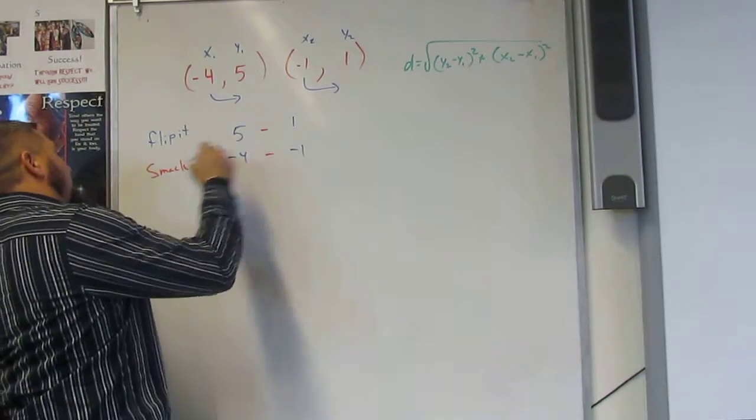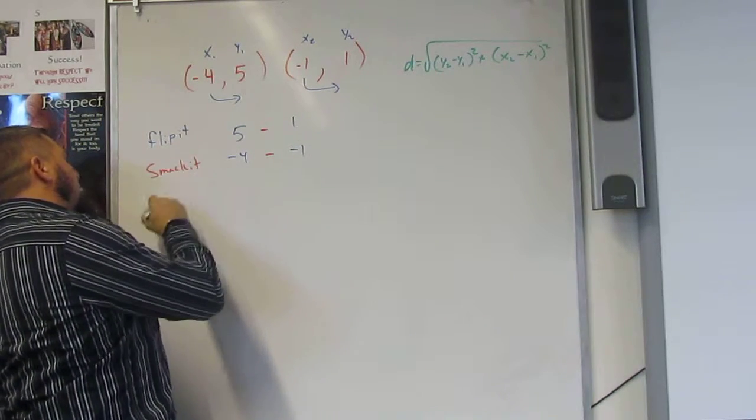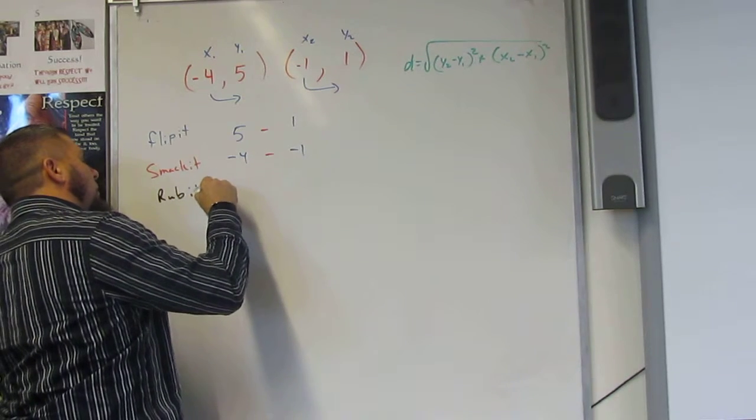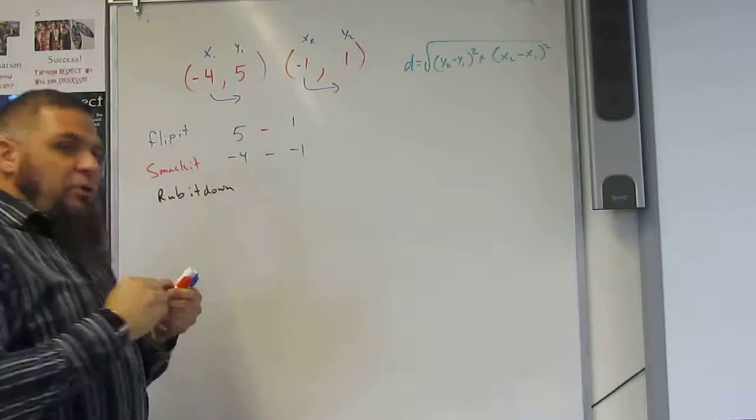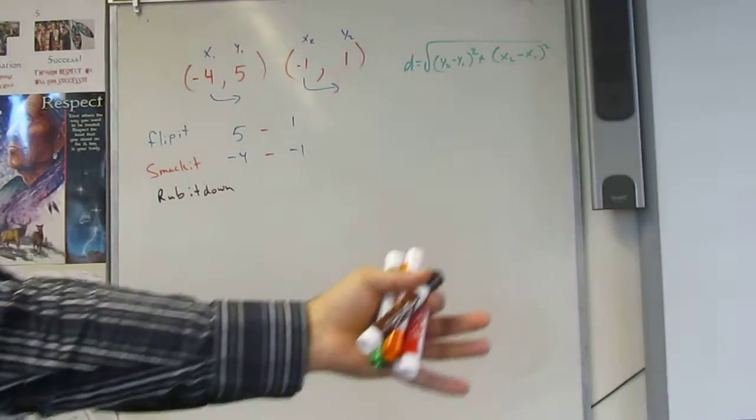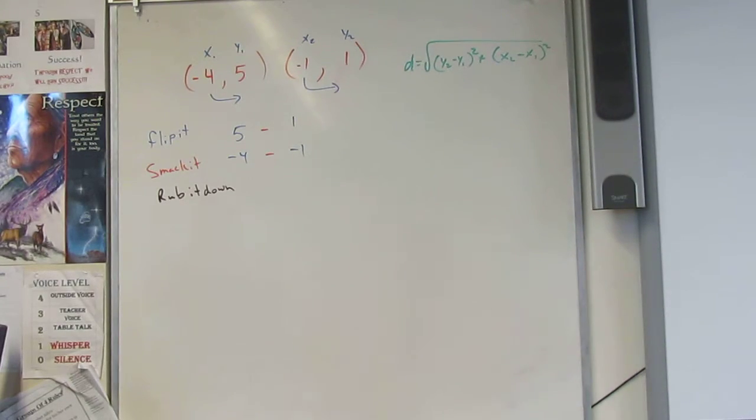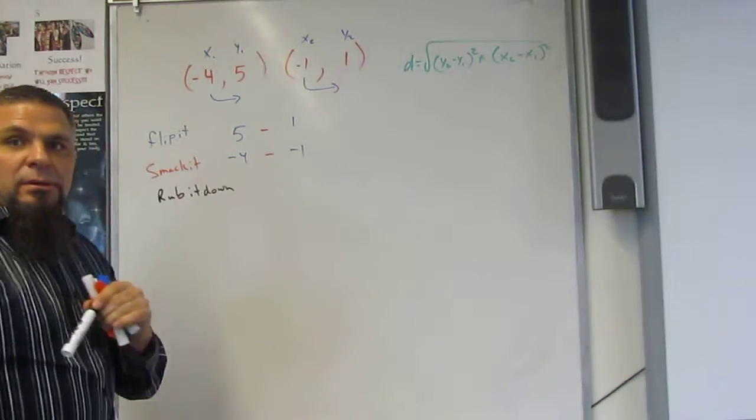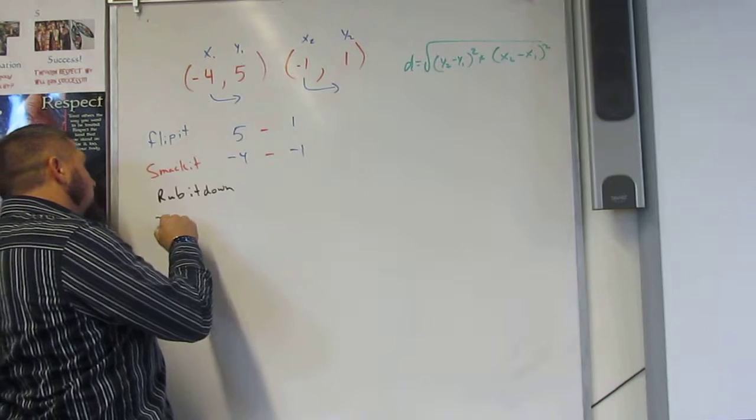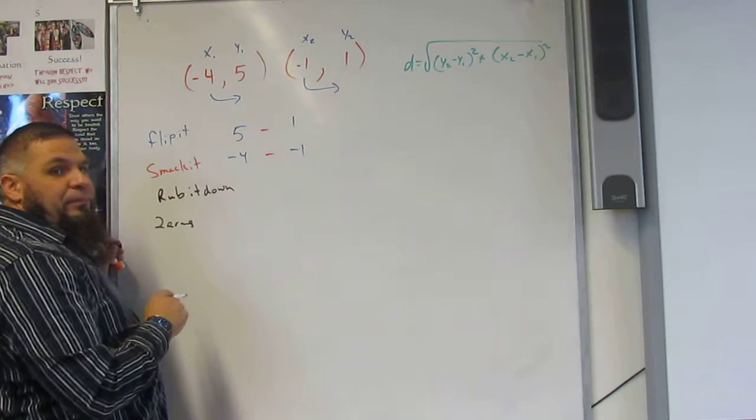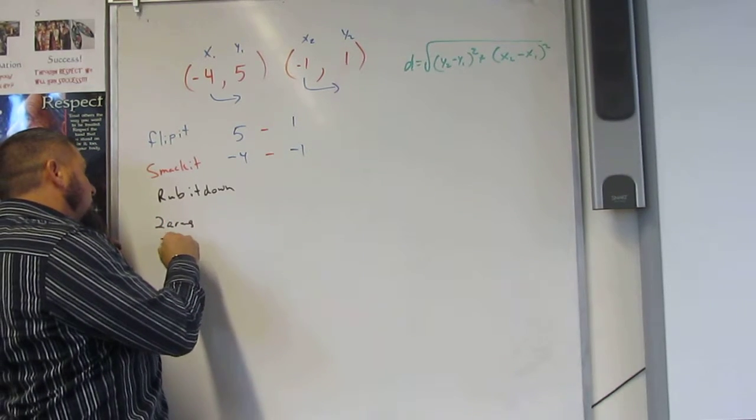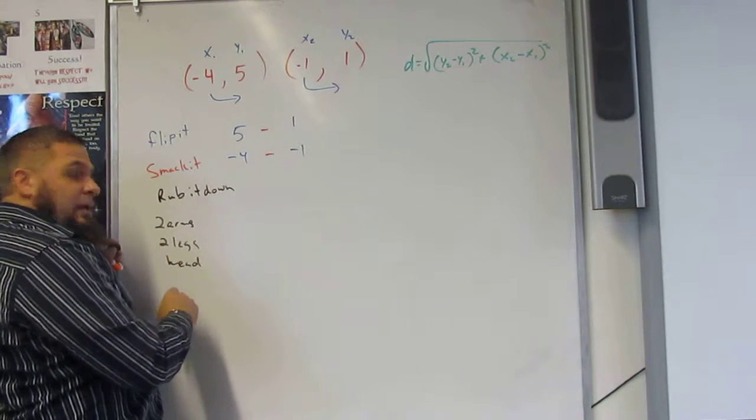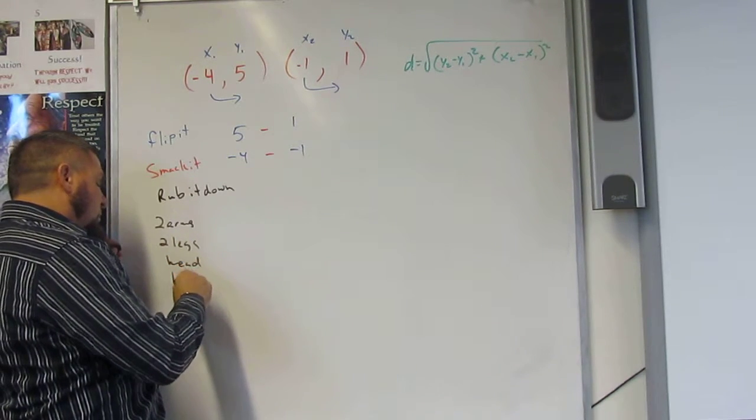Being a wrestling coach, we rub down our wrestlers all the time. Get them ready for the match. When you rub down someone, you've got different body parts. So we've got how many arms? Two. So we've got two arms. I've got two legs. I've got a head. And I've got a body.